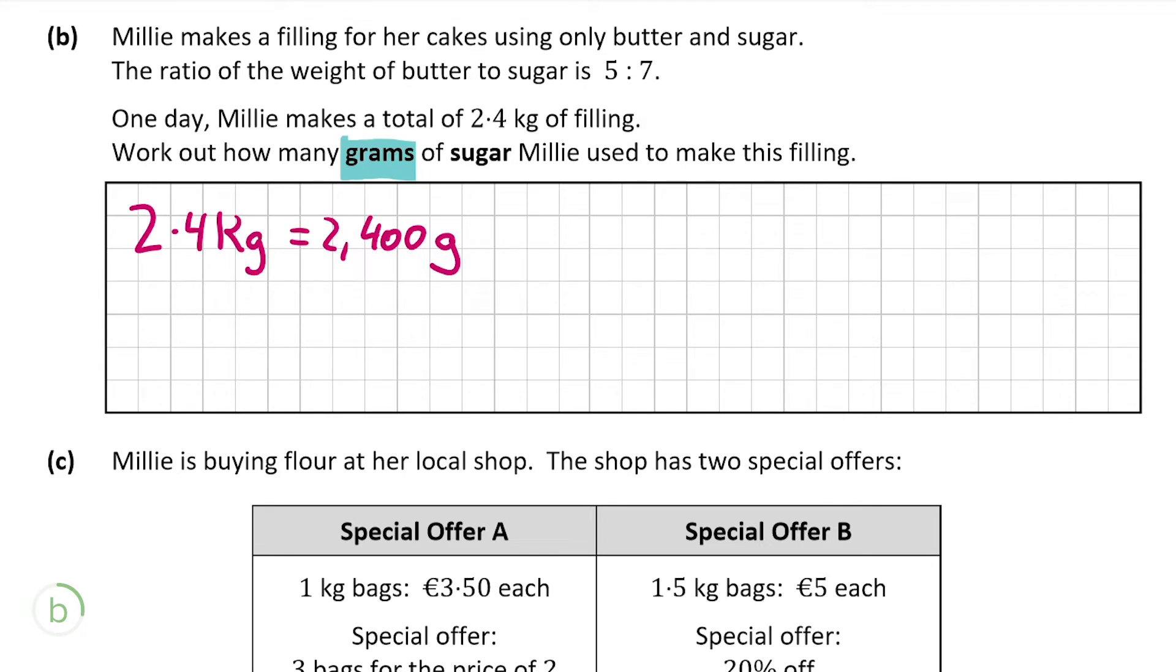The ratio is 5 to 7. Another way to write this is that butter is five twelfths and sugar is seven twelfths. As 5 to 7 means there's 12 parts in total. Butter is five of these 12 and sugar is seven of those 12. We want to get the amount of grams of sugar. We want seven twelfths of 2,400. First we get one twelfth. We divide 12 into 2,400, which is 200 grams. To get seven twelfths, we multiply this by seven. 200 by 7 is 1,400 grams. Therefore Millie used 1,400 grams of sugar to make the 2.4 kg of filling.